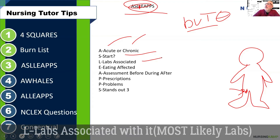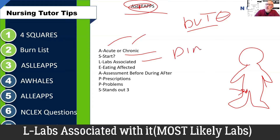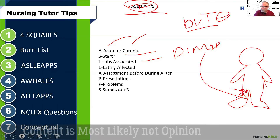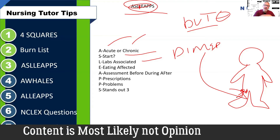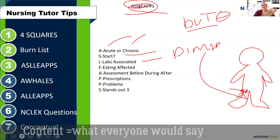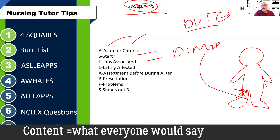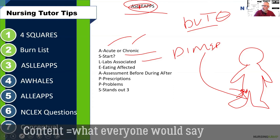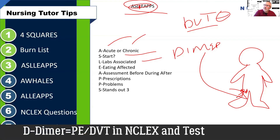The next step in ASleeps is: are there labs associated with the condition? For a DVT, yes — the D-dimer. The D-dimer tells you that there's a DVT. Now, in practice it can be complicated, but remember you're studying from the book and for the NCLEX. Most likely, if you see D-dimer on the NCLEX, that points to DVT or PE. There is a lab associated with it.